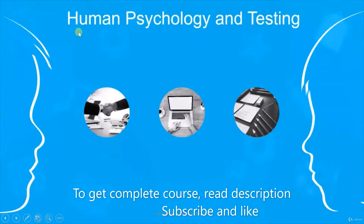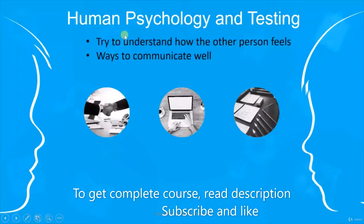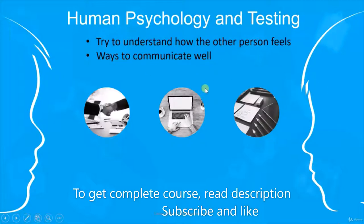Now let's understand human psychology and testing. Since we've covered confirmation bias, it is the tester's responsibility to understand how the other person feels when told their software is not working fine. To overcome that, the tester has to communicate well so it does not come across as criticism of the developer.